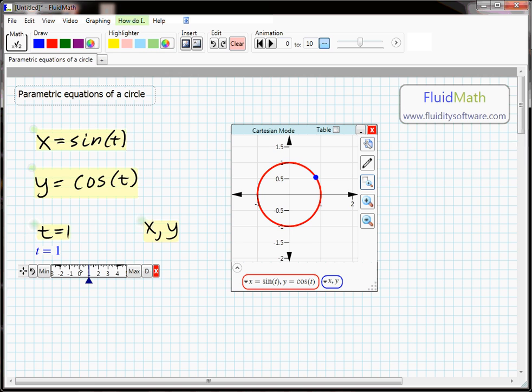Now let's have some fun. Create a slider for t and then watch the point on the circle move as we change the value of t.